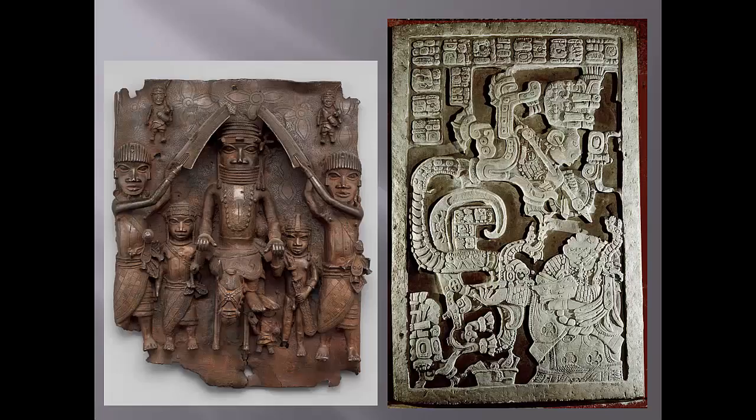What might these two works have in common? Both convey information about a ruler's status. What's especially intriguing about the work on the right is that a woman — the ruler's wife — is helping to reinforce her husband's status through an elaborate vision that comes from ritual bloodletting. Stay tuned.